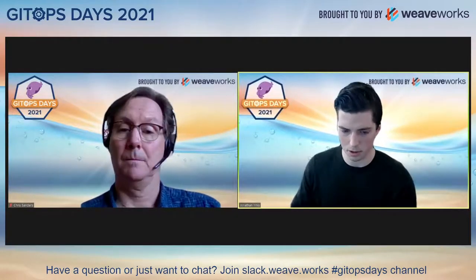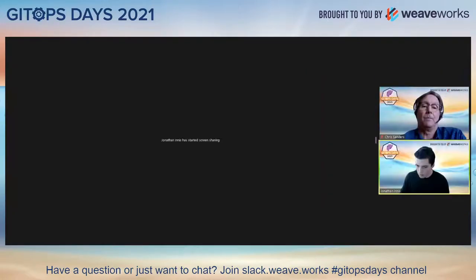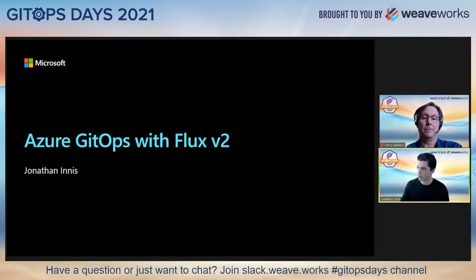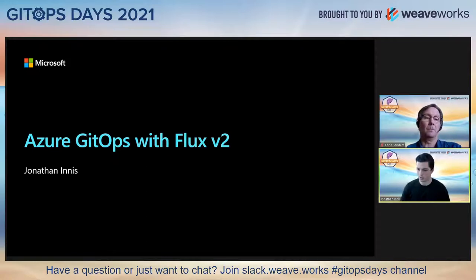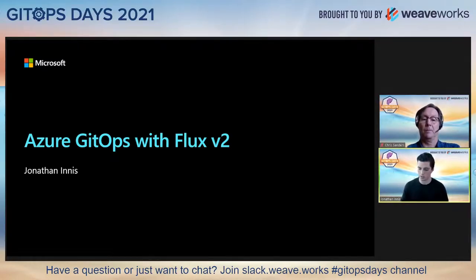Thanks, Chris. So as Chris just laid out, we are actively working on Flux 2, which is currently under development and will very soon be in private preview. I'm going to quickly walk through some of the benefits we get with Flux 2 that are part of the GitOps toolkit, then walk through a little bit of the API overview and a preview of what the API is eventually going to look like and what the process of installing Flux 2 is going to look like on a cluster when we eventually release it in private preview.